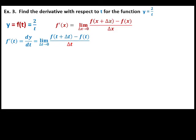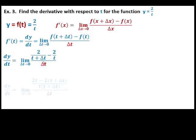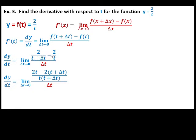This is the same as the definition of the derivative. So dy/dt: t is replaced with t plus delta t minus the original function 2 over t, all over delta t as delta t approaches 0. Perform the operation of the numerator. The LCD is t times t plus delta t. Then simplify.